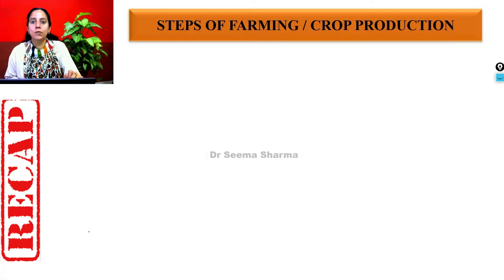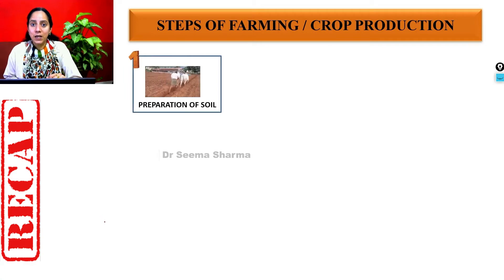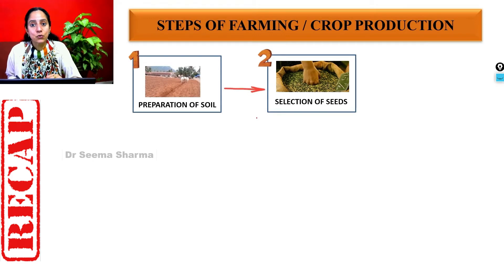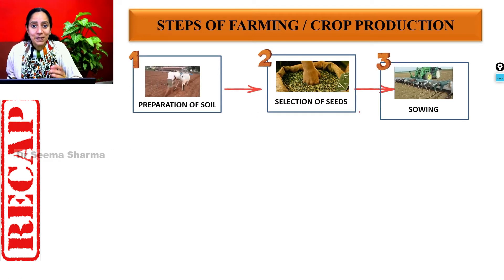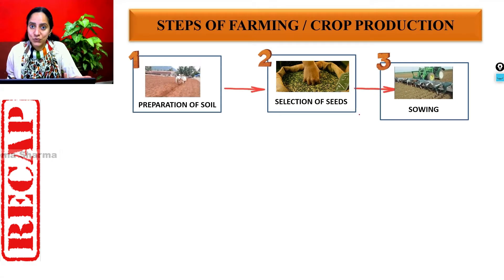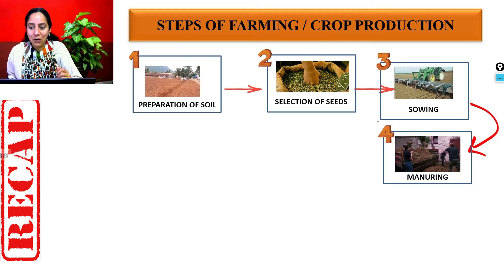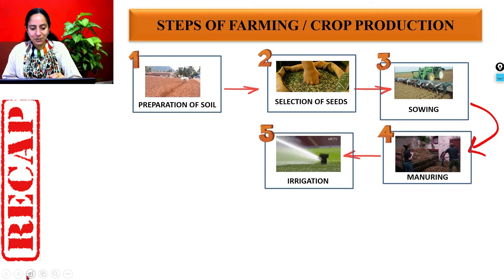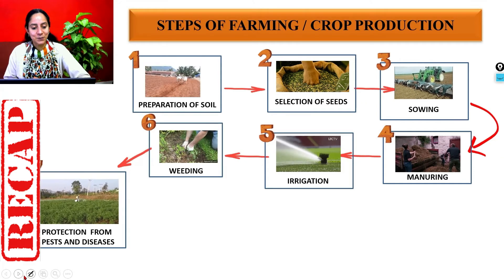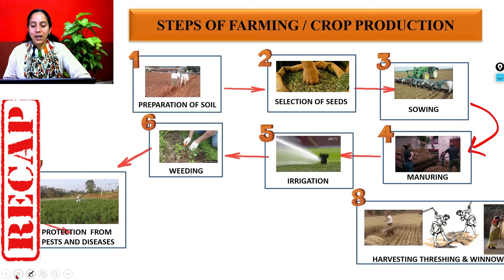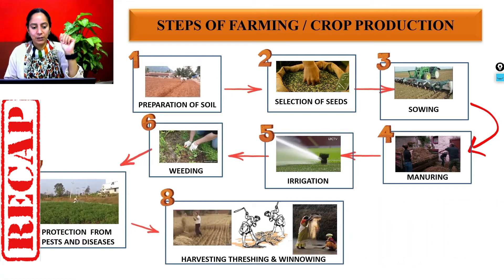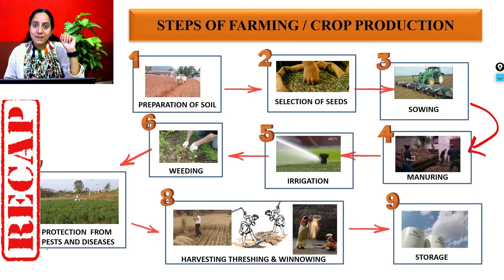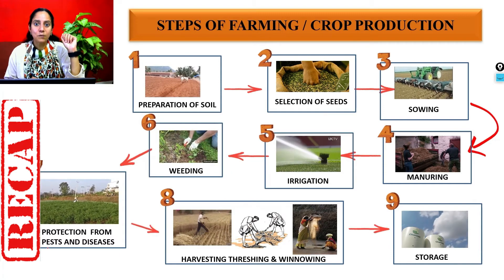In step one we learned about preparation of soil. Step two covered selection of seeds. Step three covered sowing. Today we learn about step four — manuring. Step five is irrigation, step six is weeding, step seven is protection from pests and diseases, step eight is harvesting, threshing, and winnowing, and step nine is storage. These are the basic steps in the process of crop production.